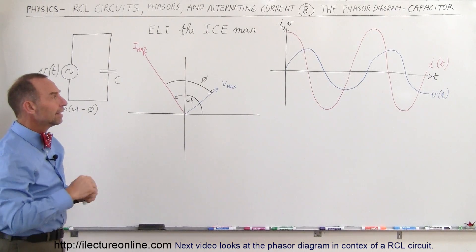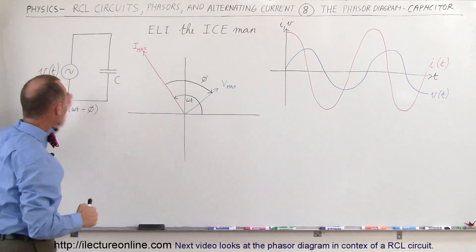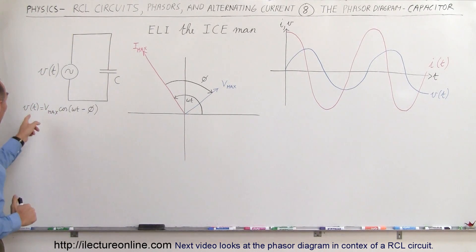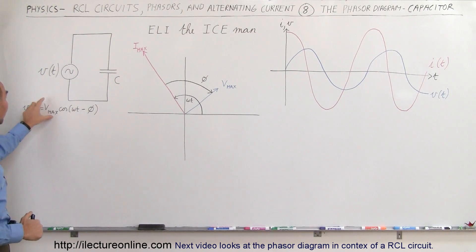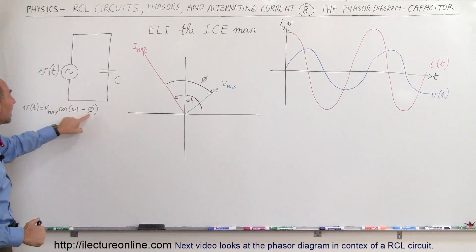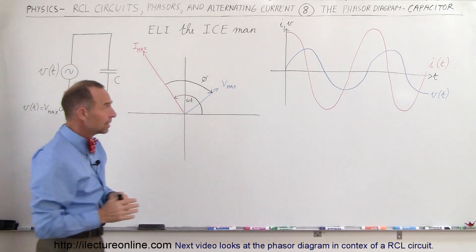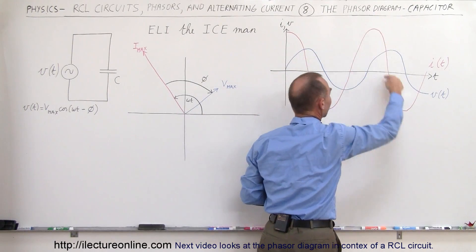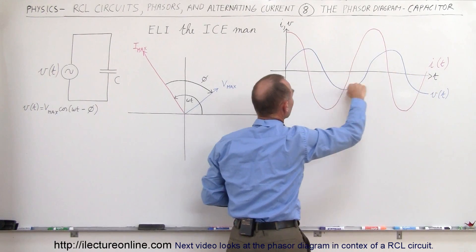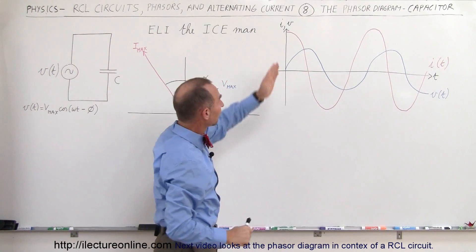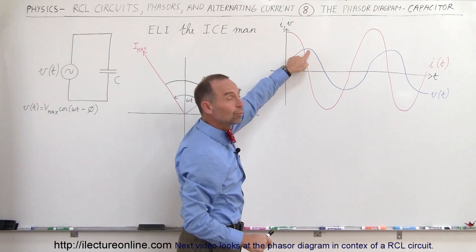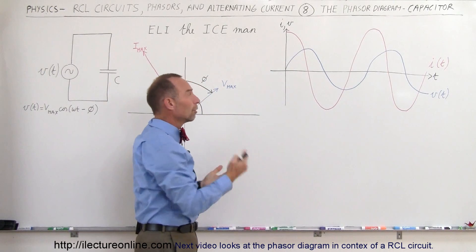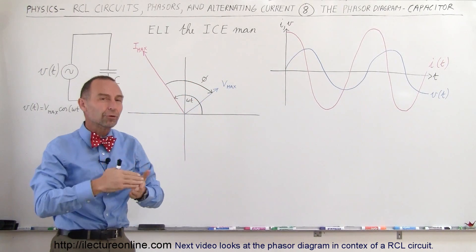The current and the voltage will oscillate according to the oscillating voltage supply. Here's the equation that shows you the voltage as a function of time — it's the maximum voltage times the cosine of omega t minus the phase angle. Looking at the current and voltage as a function of time, the current oscillates (the red line) and the voltage oscillates (the blue line). The current reaches a maximum value before the voltage, and the phase difference is 90 degrees — the current leads the voltage by 90 degrees.